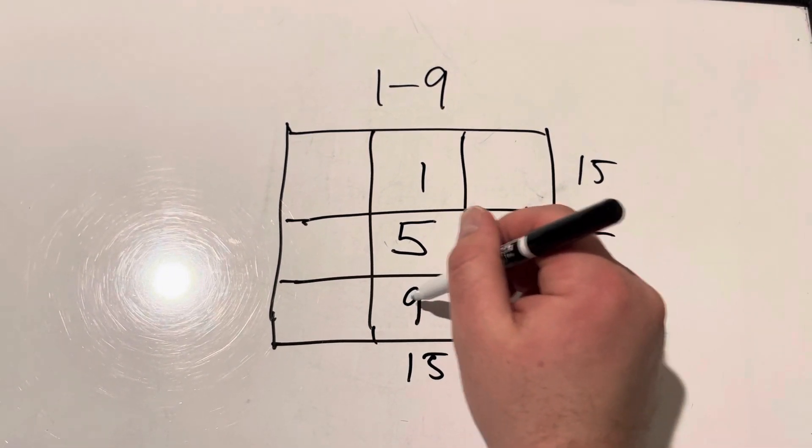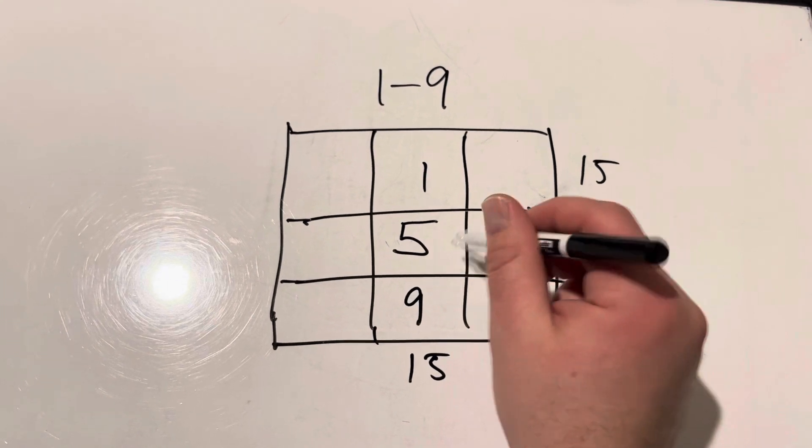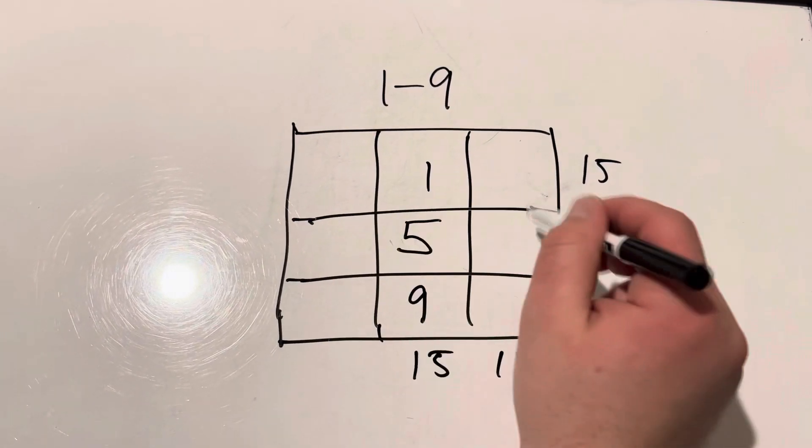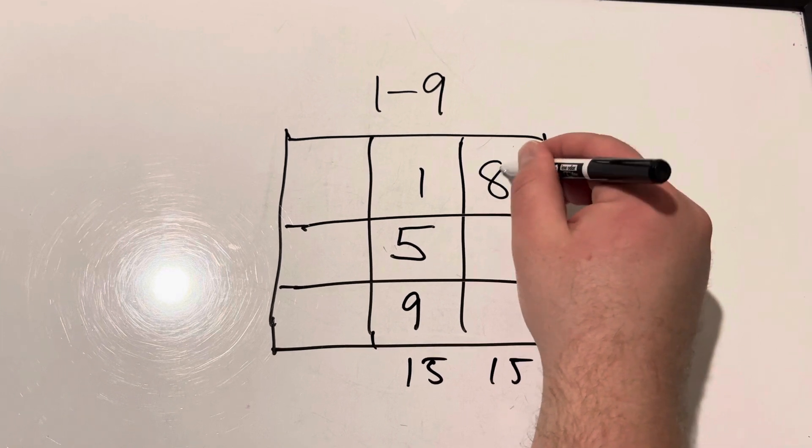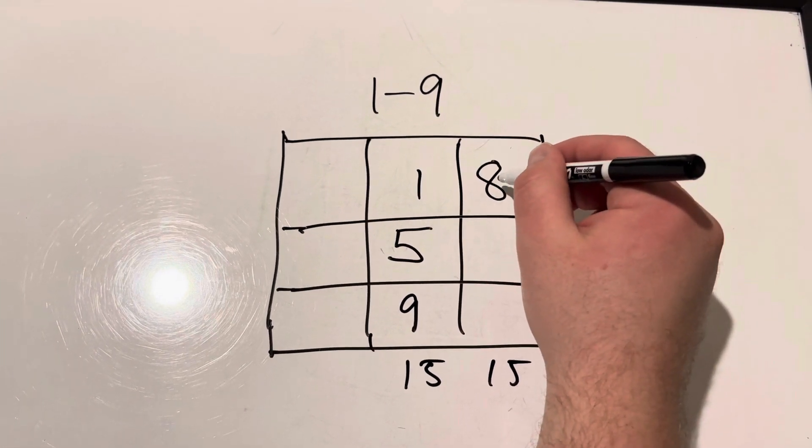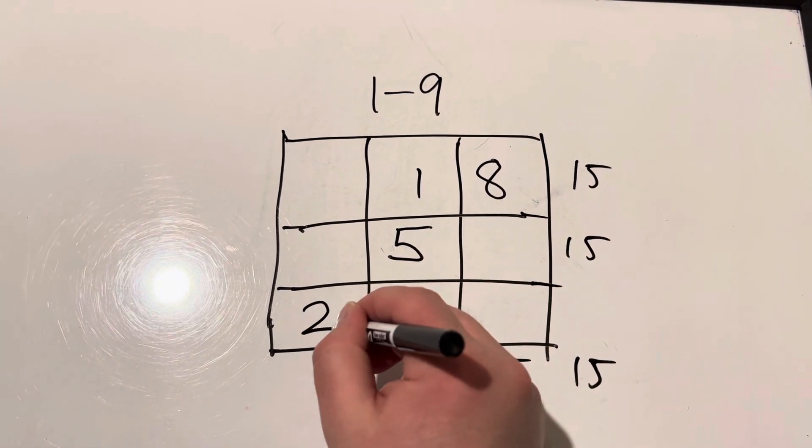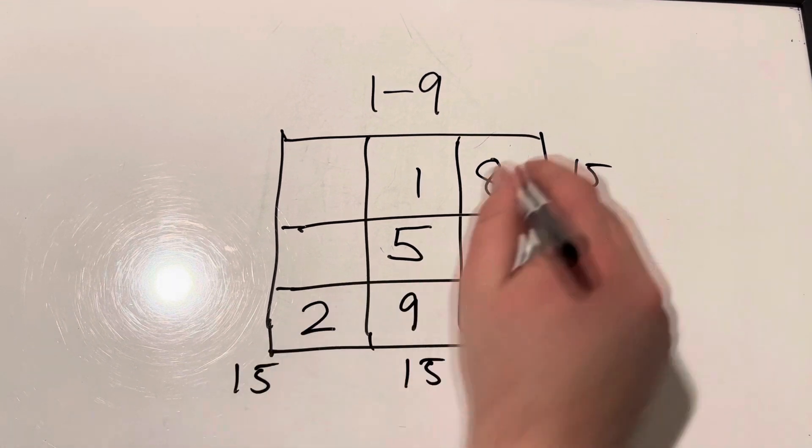Now if nine's down here, we know that eight needs to be somewhere else, up here or right here. So we'll go ahead and put eight right here, which would make it so that this guy is two, so that it adds up to 15 going diagonal.